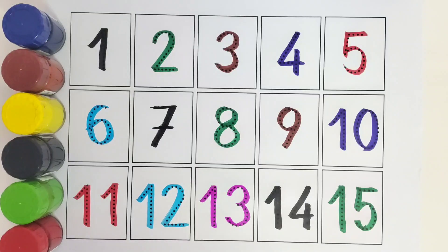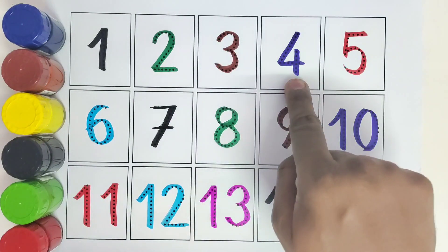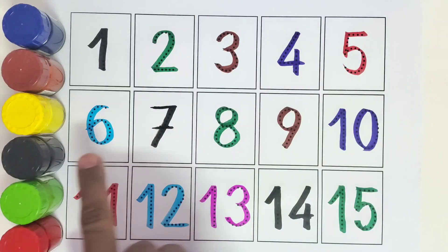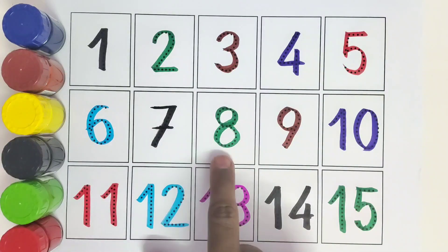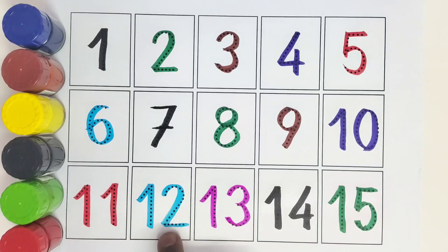Let us read them one by one. 1, 2, 3, 4, 5, 6, 7, 8, 9, 10, 11, 12, 13, 14, 15.